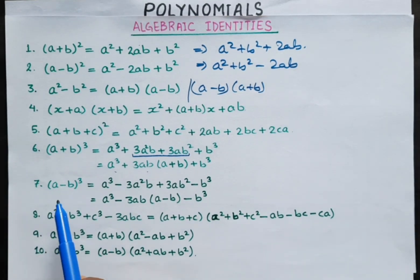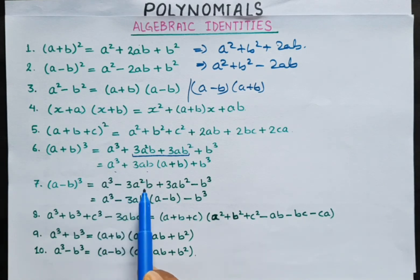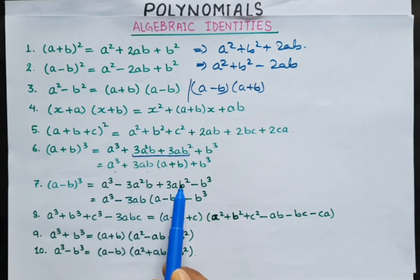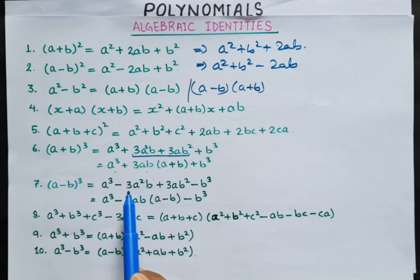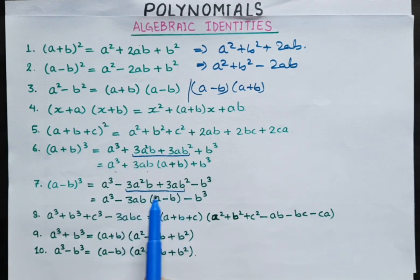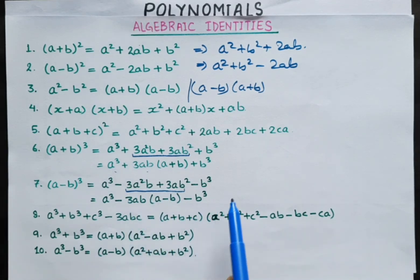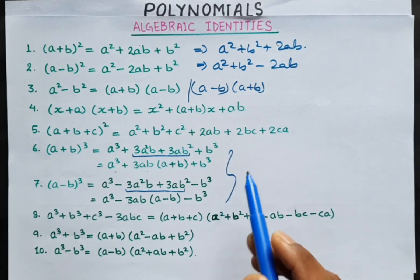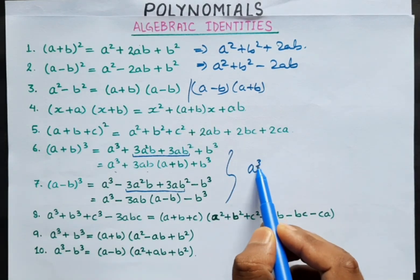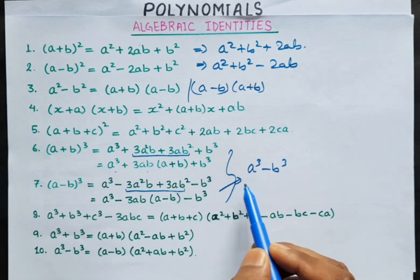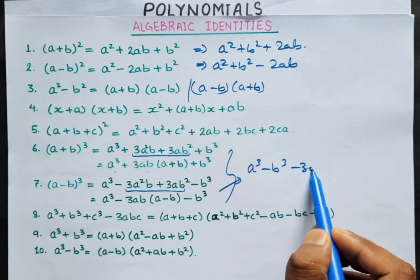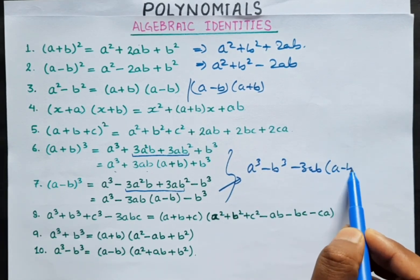Similarly, identity number 7: (a - b) whole cube is equal to a cubed minus 3a squared b plus 3ab squared minus b cubed. Similarly, a cubed minus b cubed equals (a + b)³ minus 3ab(a - b).